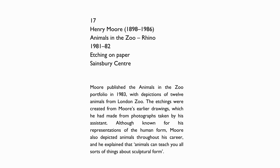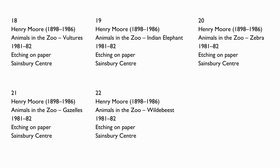Moore published the Animals in the Zoo portfolio in 1983, with depictions of 12 animals from London Zoo. The etchings were created from Moore's earlier drawings, which he had made from photographs taken by his assistant. Although known for his representations of the human form, Moore also depicted animals throughout his career, and he explained that animals can teach you all sorts of things about sculptural form.